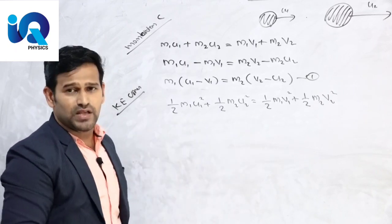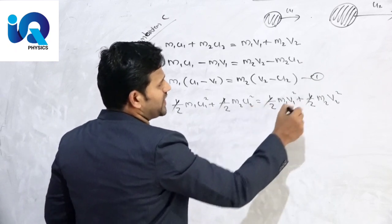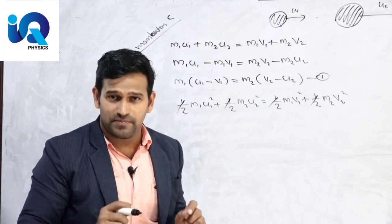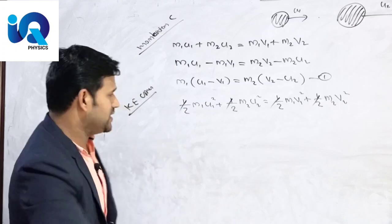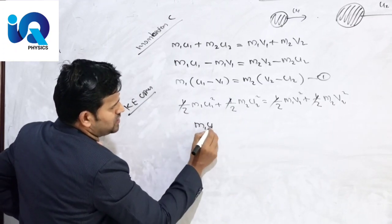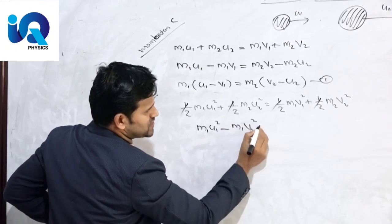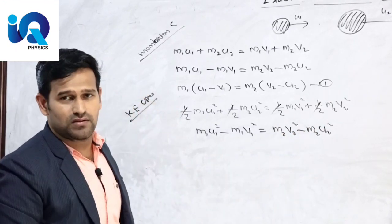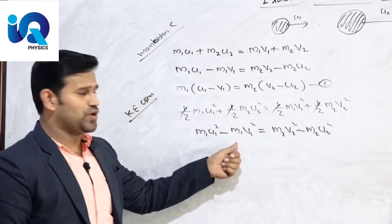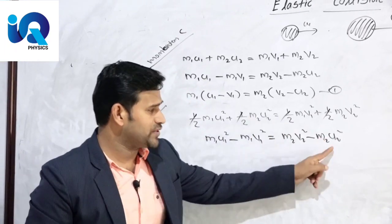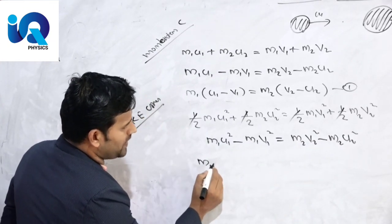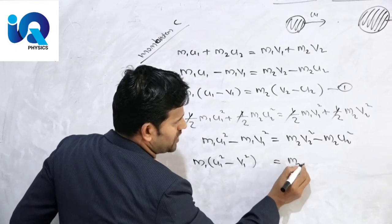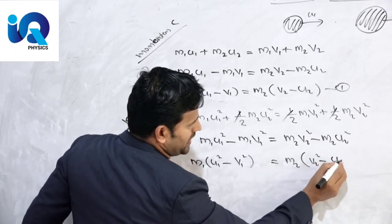We cancel the common factor of one-half. This gives: M1U1 squared minus M1V1 squared equal to M2V2 squared minus M2U2 squared. Factoring: M1 into U1 minus V1 into U1 plus V1 equal to M2 into V2 minus U2 into V2 plus U2. This is Equation number two.